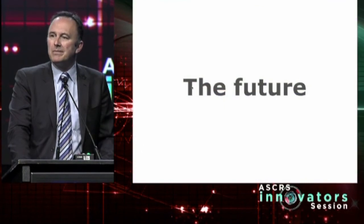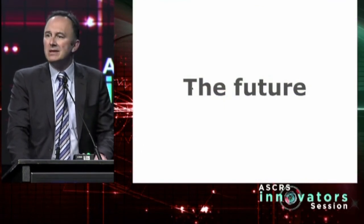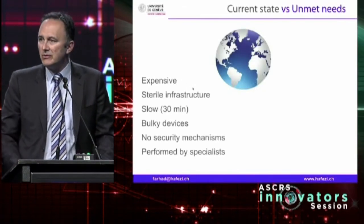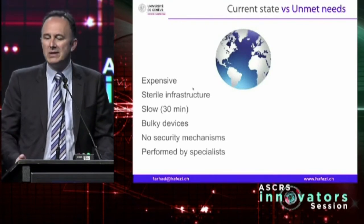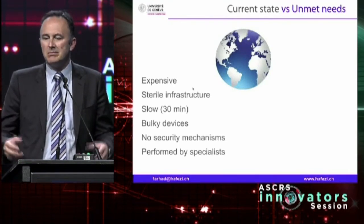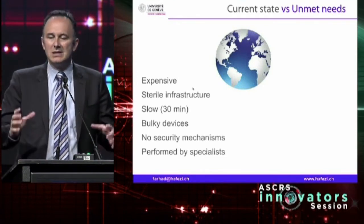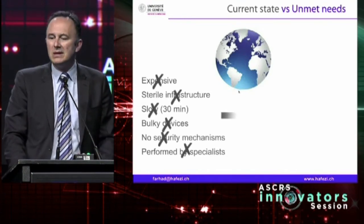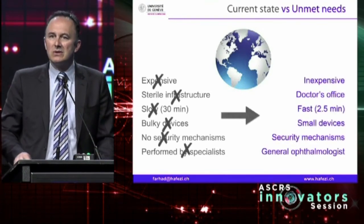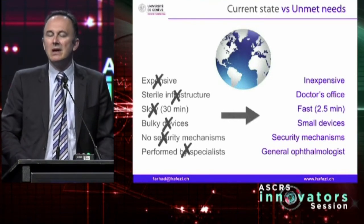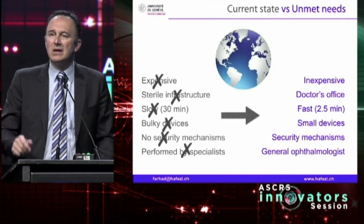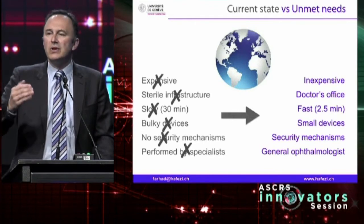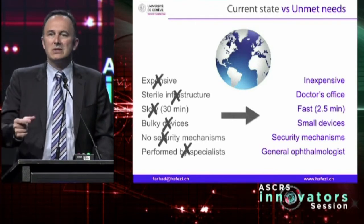What will the future bring? Looking at the current state and unmet needs, we shouldn't look at developed countries only. On a global level, this treatment has shown its proof of principle, but it's expensive. It's been performed in operating theaters. It is slow, the devices are bulky, there is no security mechanism at hand, and it's performed by specialists. To be effective on a global level, we need to make it inexpensive, take it into the consultation room, make it fast, implement security mechanisms, and give it into the hands of the general ophthalmologist — and not treat the end stage of an ulcer, but treat the infiltrate, treat the early stages of the disease.